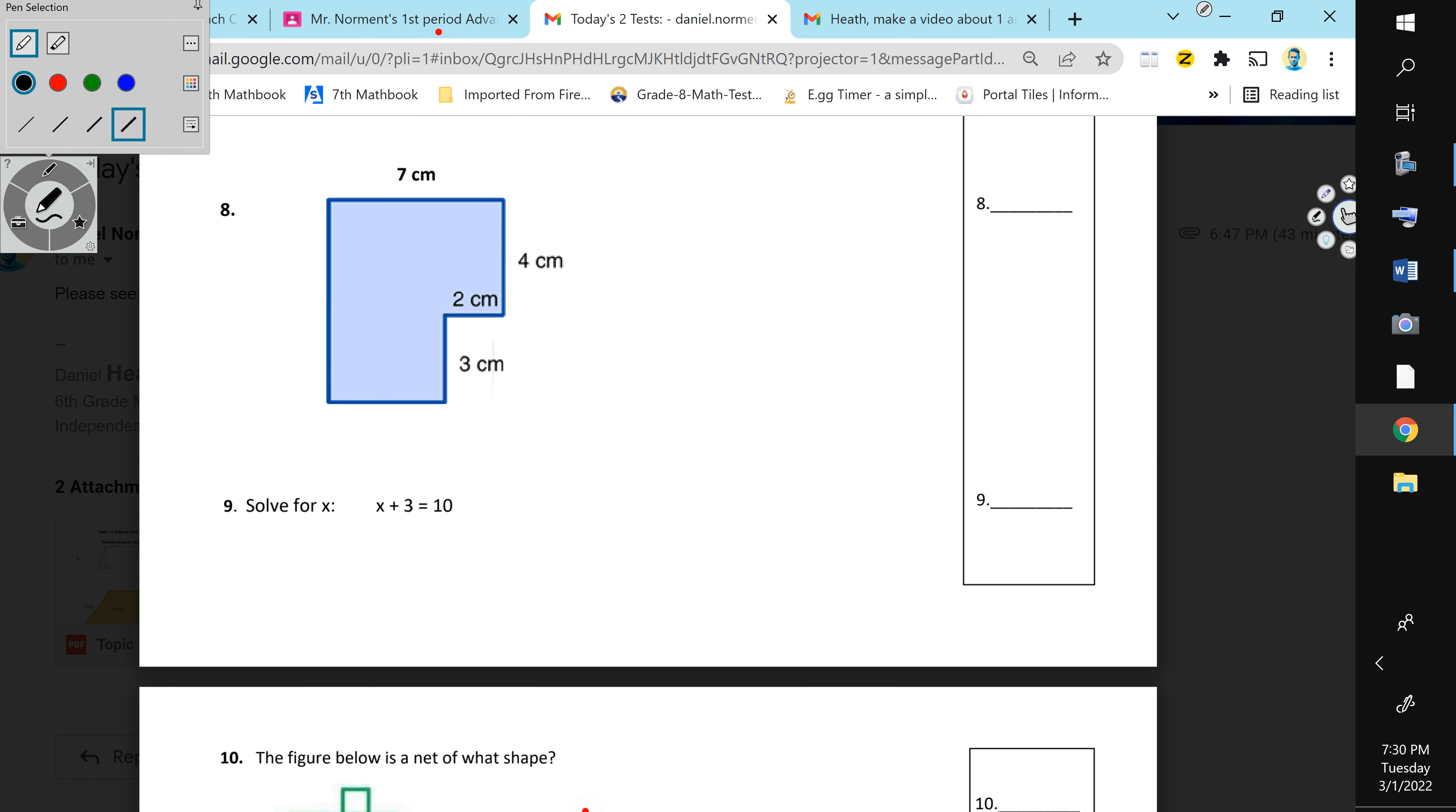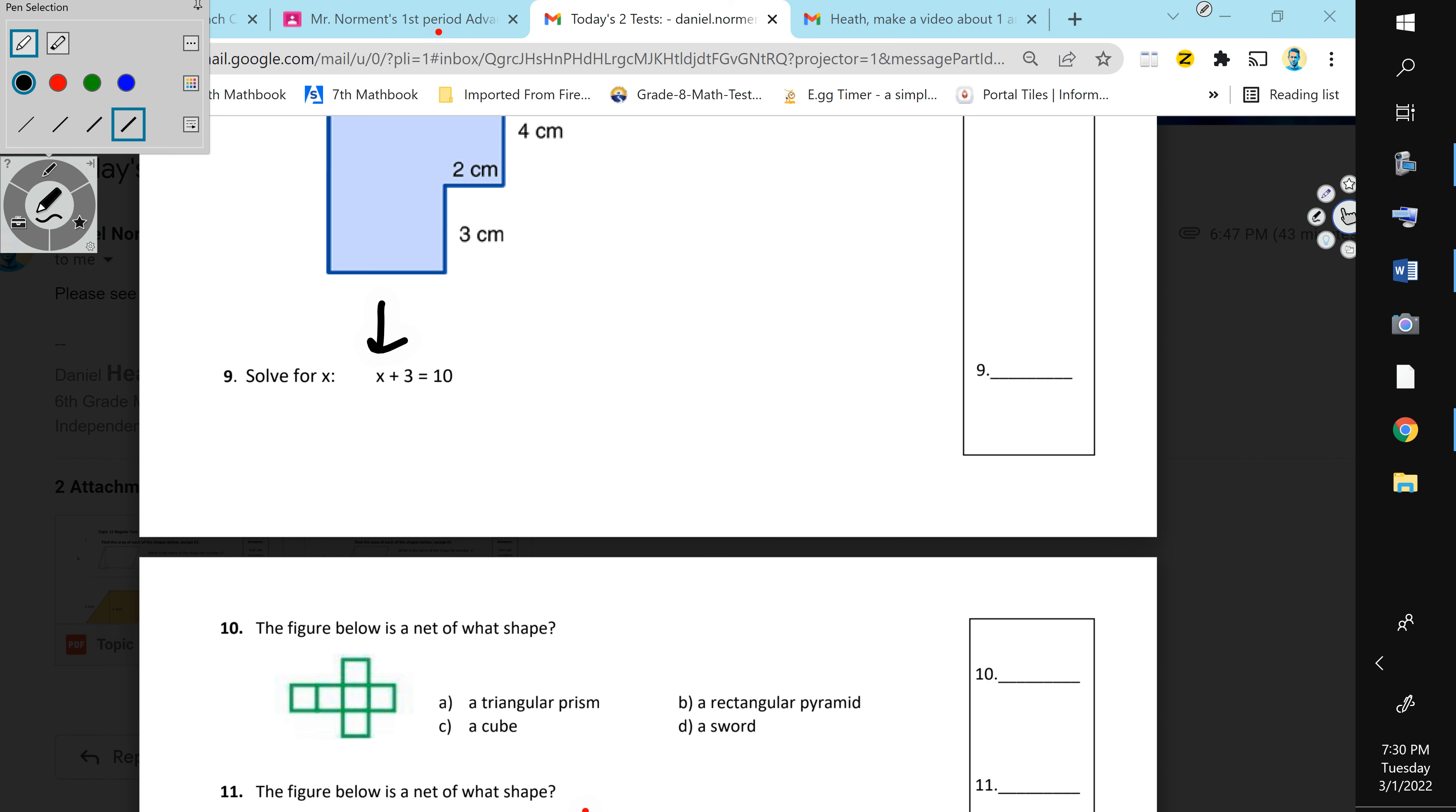Number nine, remember, do the opposite of what you see to get x by itself. What's the opposite of plus three? You're going to subtract three from both sides, cross out the twins, and x is going to equal ten minus three. Piece of cake.